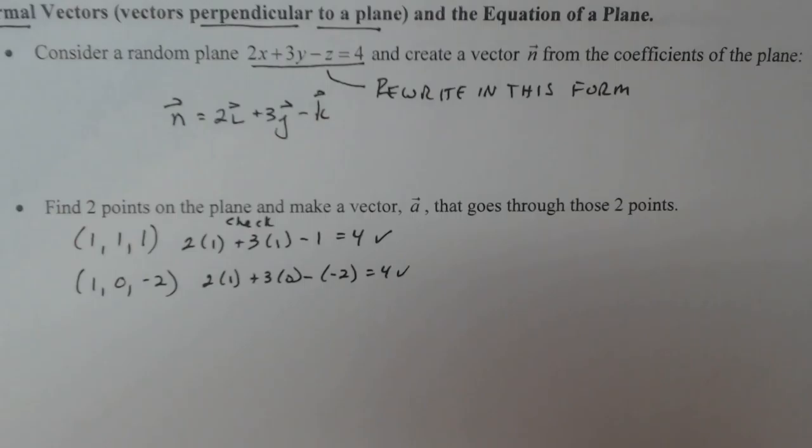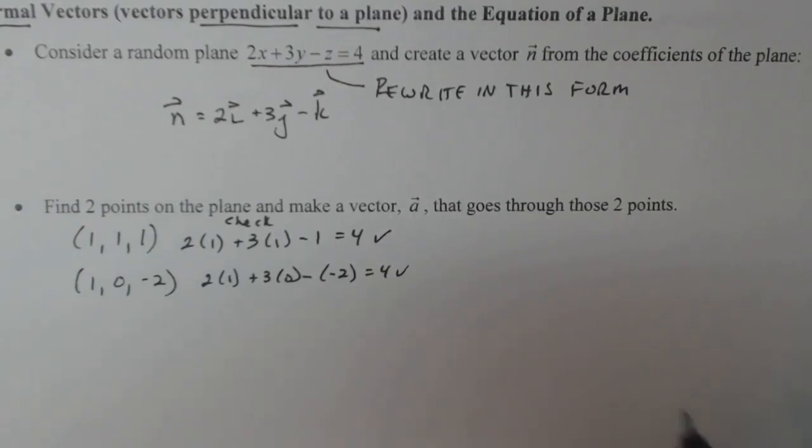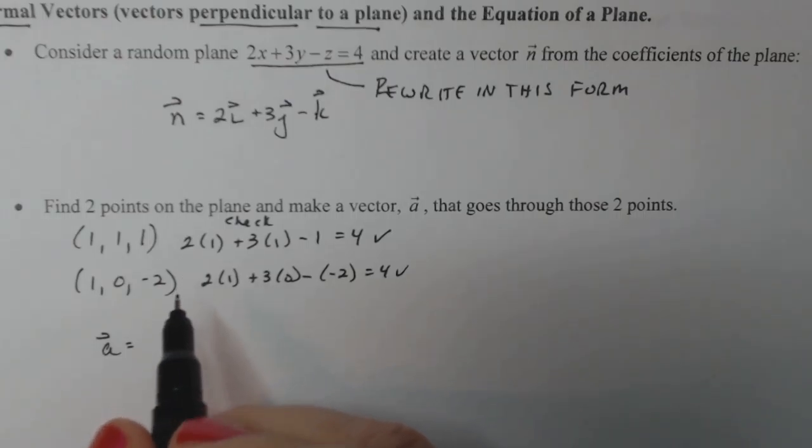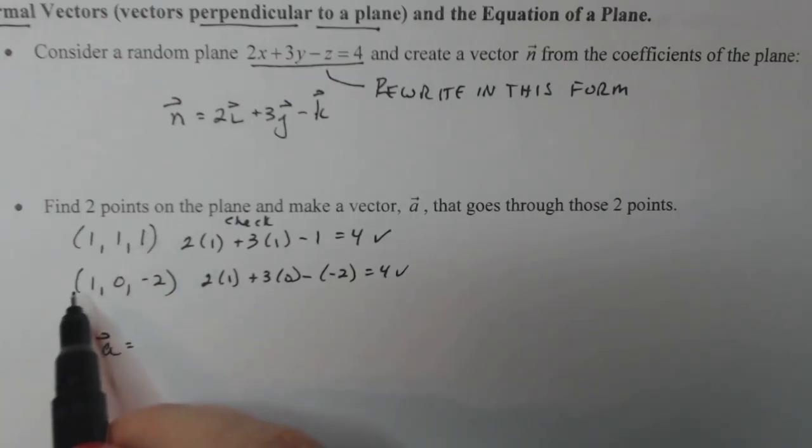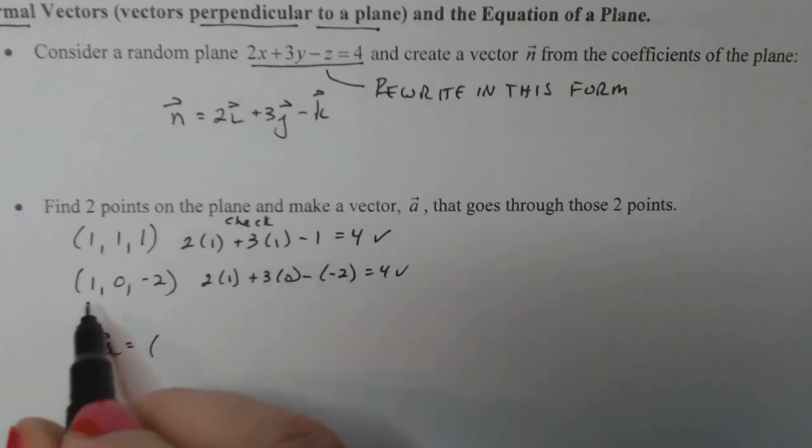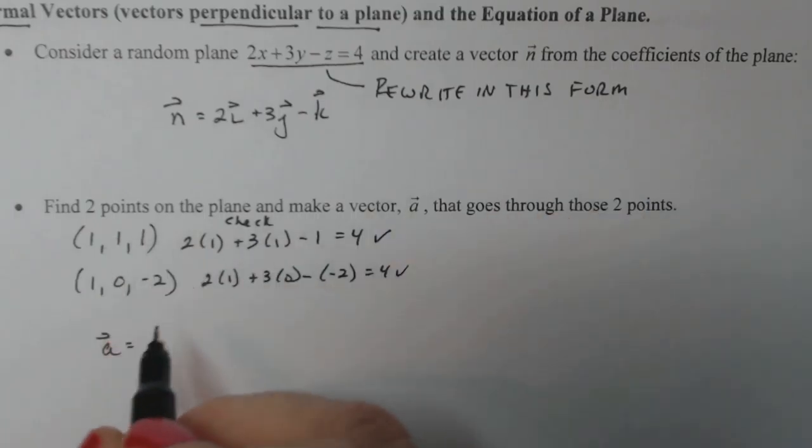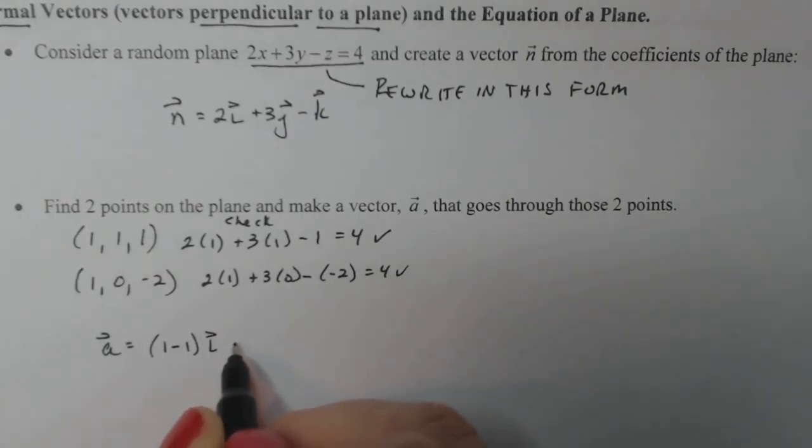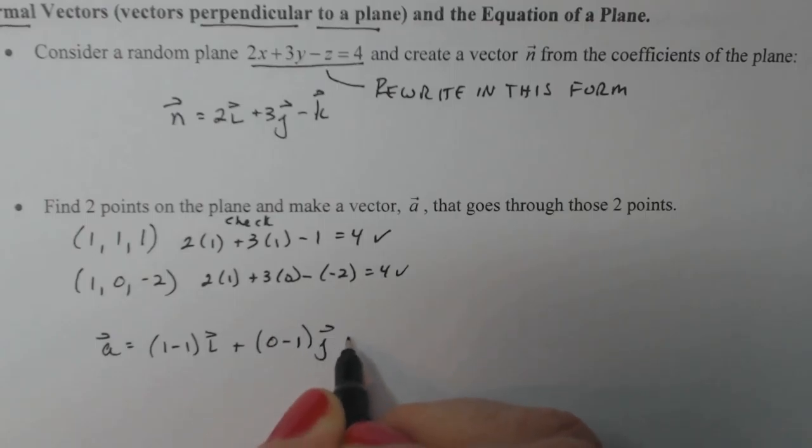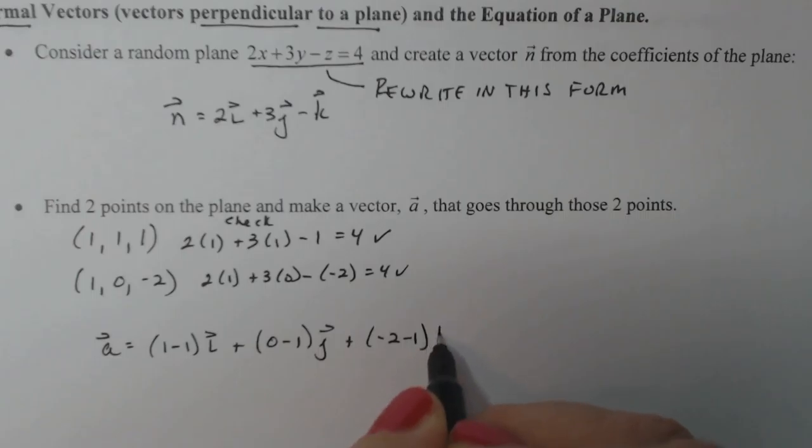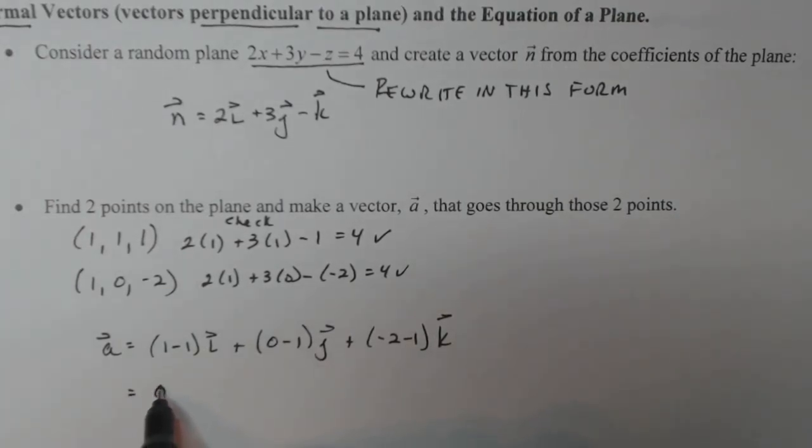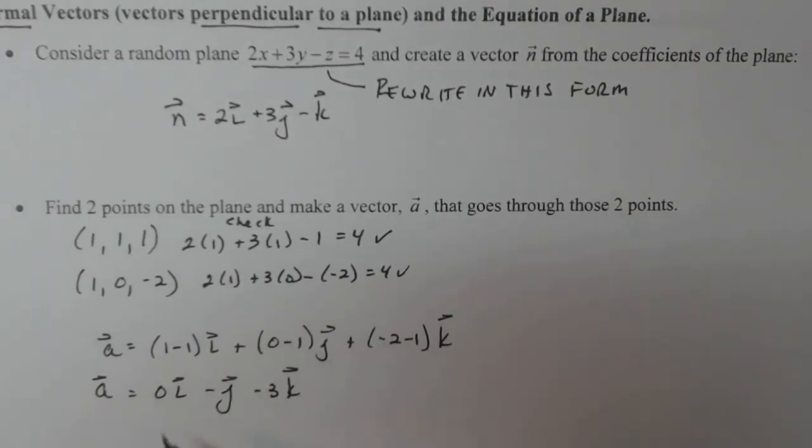It says I need two points though. So let's do one and zero. If I make z minus two, then it'll be two times one plus three times zero minus a negative two, so that's going to also give me four. So that works. There's our two points that lie on the plane. You can make any two points you want and this works. If you don't want to do the same two points I do, turn the video off, find two other points, make a vector a that goes through it, and this works no matter what. It's very cool.